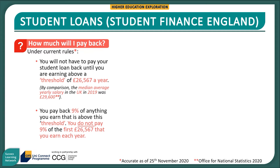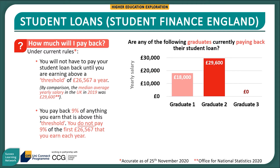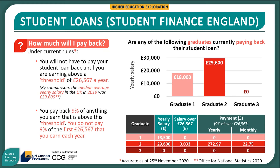It's quite complicated and is probably best understood with an example. Let's look at the yearly salaries of three graduates who have completed their higher education studies. Graduate one is earning £18,000 a year. Graduate two is earning the UK 2019 median average of £29,600 a year. Graduate three is currently looking for work and so is not earning anything. The answer is that only graduate two is paying back their student loan, because they are the only one earning above the threshold of £26,567 a year.